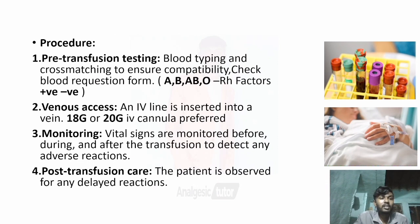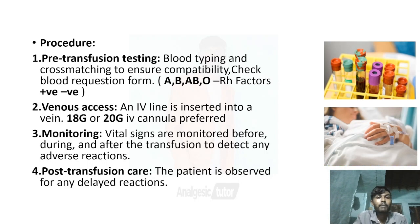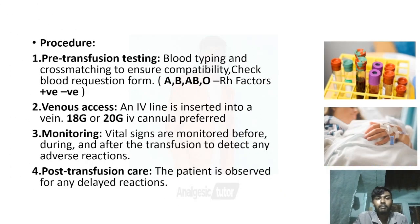What is the procedure for blood transfusion? The pre-transfusion test includes blood type and cross-match — we do a compatibility check. We complete the blood requisition form, verify the blood bag against the requisition form, and perform the correct match before proceeding.